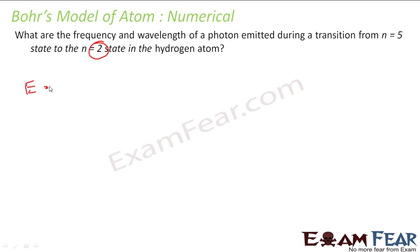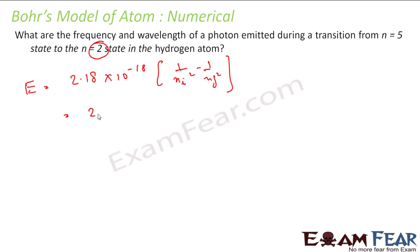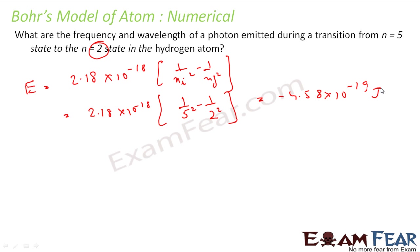So I know that E is nothing but 2.18 into 10 to the power minus 18 into 1 by n-initial squared minus 1 by n-final squared. You put the values here. So this becomes 2.18 into 10 to the power minus 18, n-initial was 5, so 1 over 5 squared minus n-final was 2, so 1 over 2 squared. If you solve this you get minus 4.58 into 10 to the power minus 19. So this much energy is emitted when the electron jumps from 5 to 2.